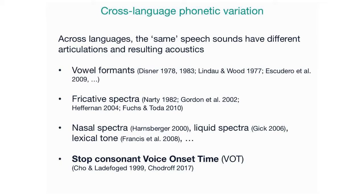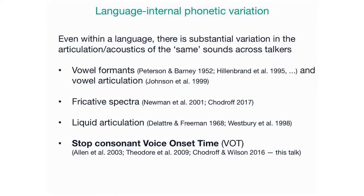This has certainly been most studied in the case of vowels. But if you look at many different types of sound measured in many ways, either articulatorily or acoustically or both, you find that the same speech sounds differ. This is true for vowels, but also for fricatives. There's a really nice study by Jimmy Harnsberger on nasal consonants that demonstrates this across closely related languages. Their nasals are measurably and perceptually different, for lexical tone and so forth. And today I'm going to talk about stop consonant voice onset time.